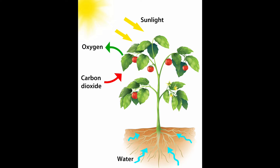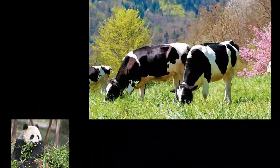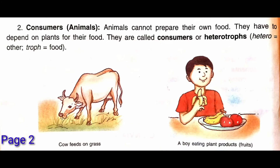To koi to hoga jo usko consume bhi karega, jo us prepared food ko khayega bhi. So here are some examples of animals who are eating plants or the green leaves. Animals apna food khud nahi prepare kar sakte. That's why they are dependent on plants. Animals cannot prepare their own food; they have to depend on plants for their food. They are called consumers, or heterotrophs. Heterotrophs means those who depend on others for their food.